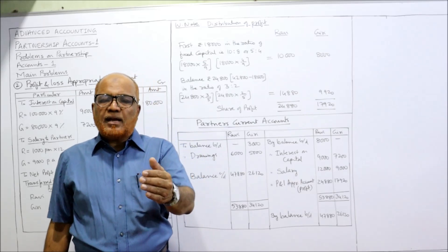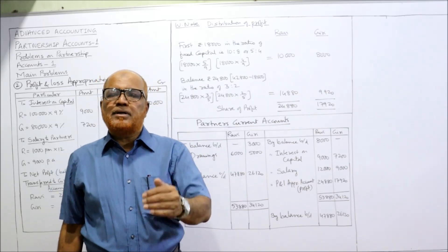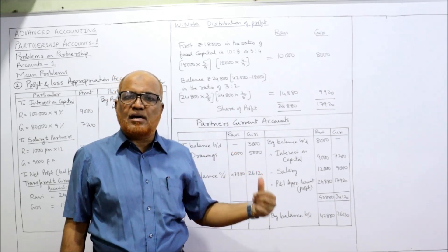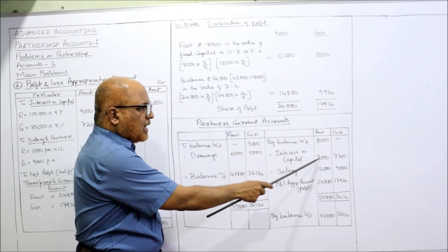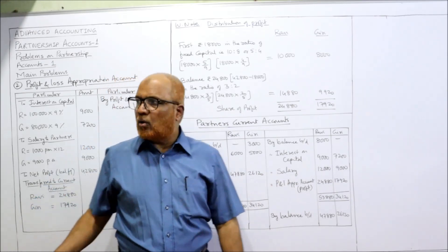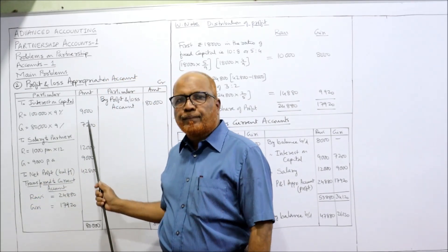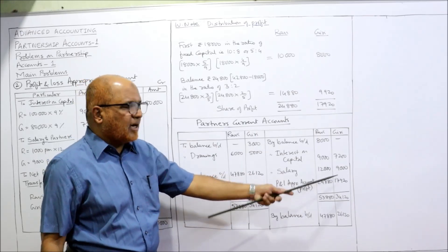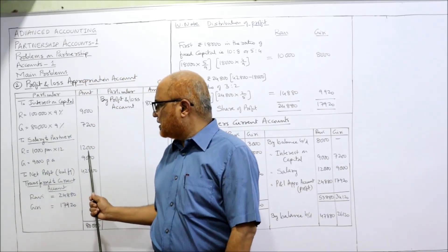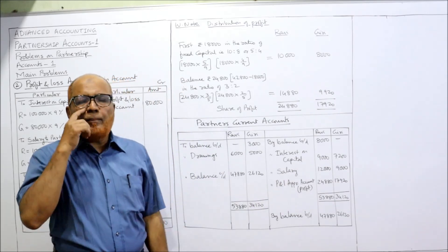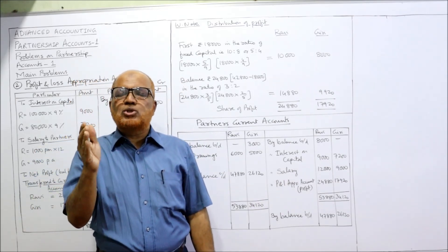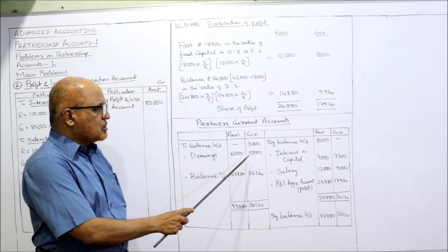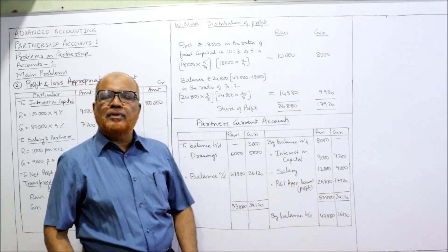Now the partners are getting interest on capital and salary, and both these items should be taken on the credit side. Interest on capital: nine thousand for Ravi and seven thousand two hundred for Giri, as already calculated. Salary of the partner: twelve thousand for Ravi and nine thousand for Giri is taken on the credit side. Apart from that, drawings should be taken on the debit side: drawings of six thousand for Ravi and five thousand for Giri as given in the problem.